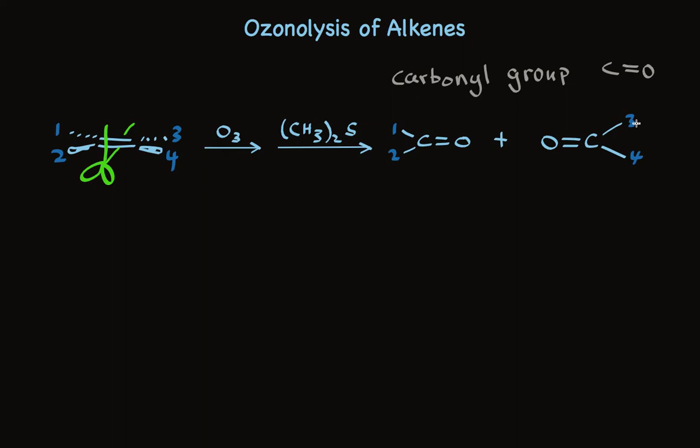The groups I've shown as one, two, three, and four can be hydrogens or alkyl groups or aromatic compounds. So the products are two aldehydes, two ketones, or one of each, depending on what we have there.